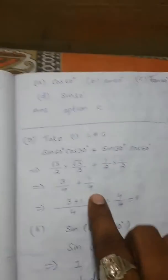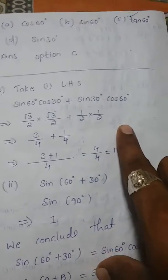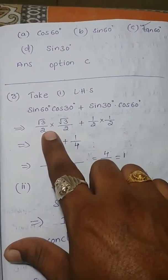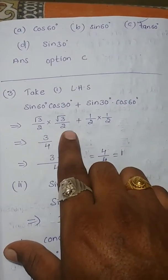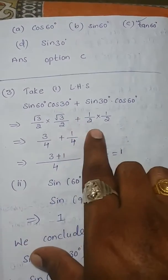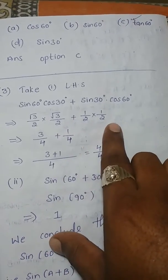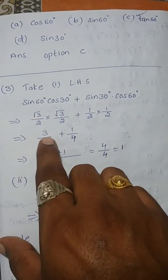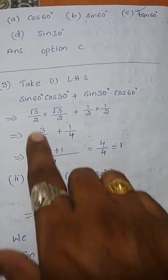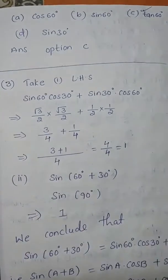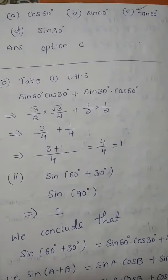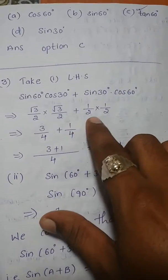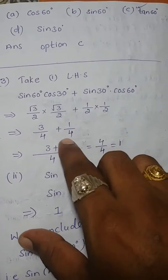Substituting all the values from the table: root3/2 into root3/2 plus 1/2 into 1/2. Root3 into root3 is 3, and 2 into 2 is 4, giving 3/4. Then 1 into 1 is 1, and 2 into 2 is 4, giving 1/4.